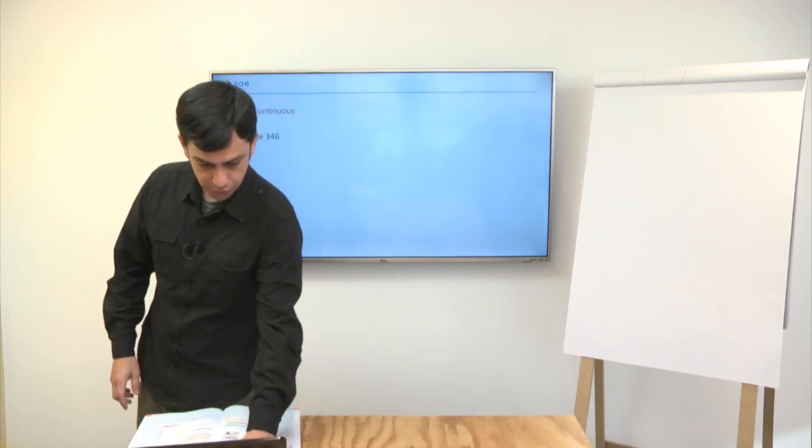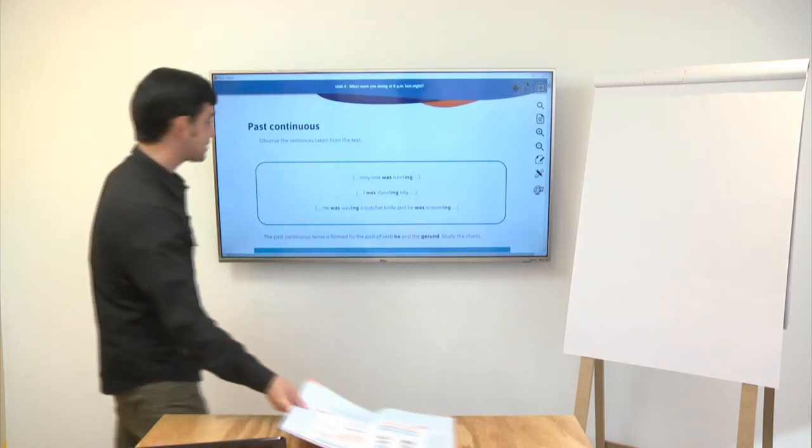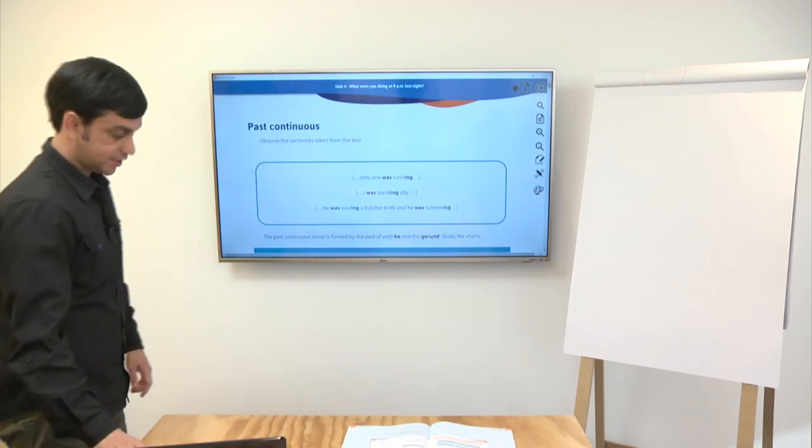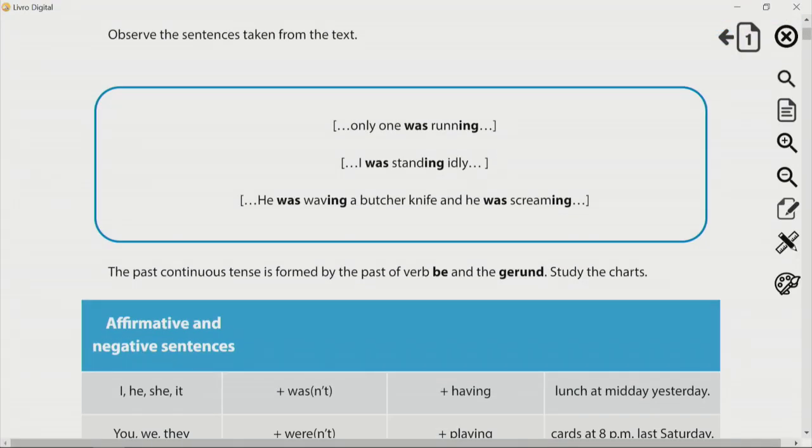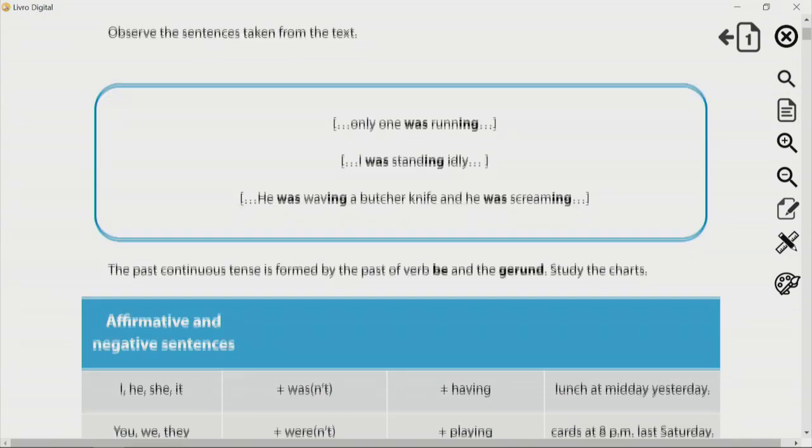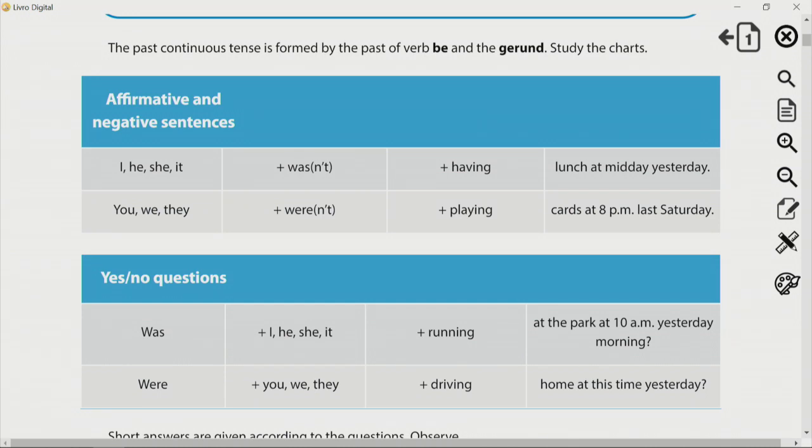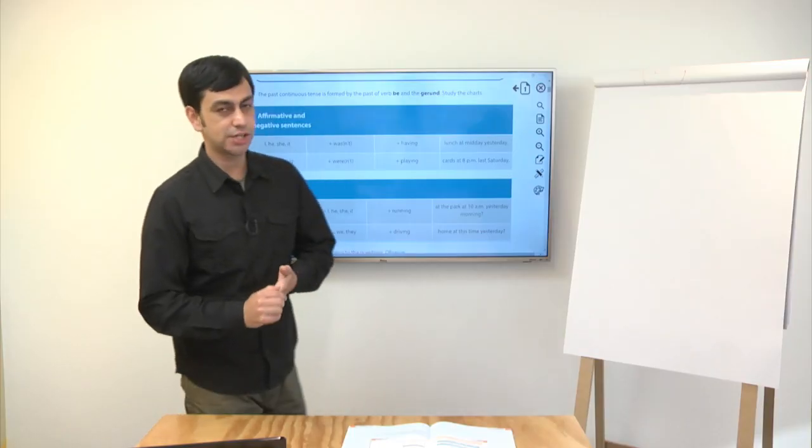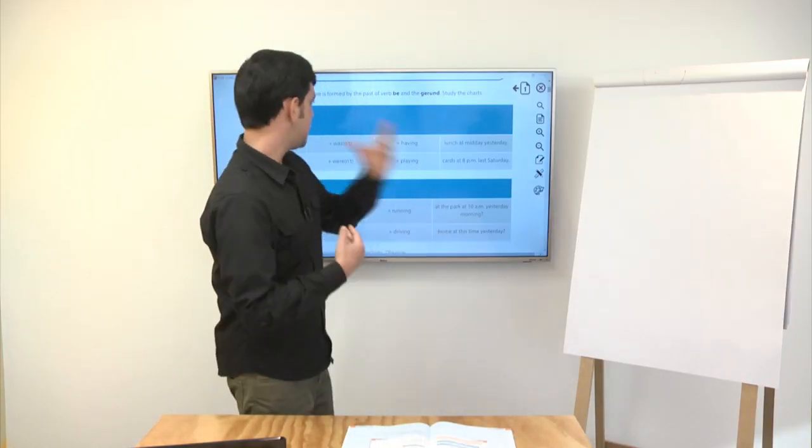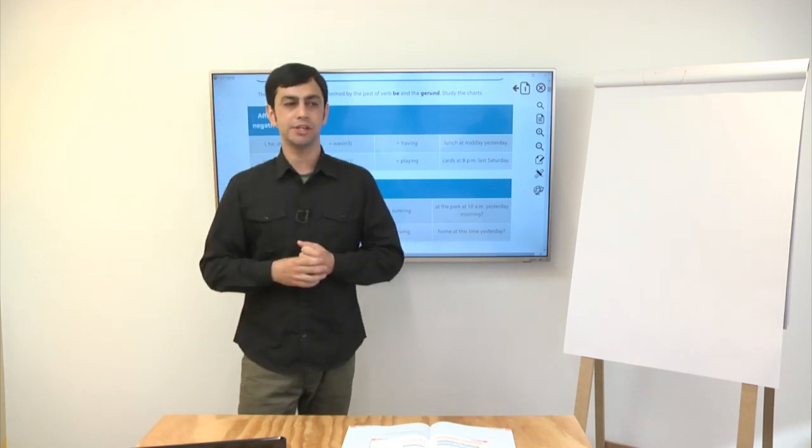So, if we move to page 346, you have the past continuous. Vocês têm aqui algumas frases que foram retiradas do texto. The past continuous is formed by the past of verb to be and the gerund. Study the charts. Vamos formar, então, o past continuous usando o verbo to be no passado e um verbo principal com ing no final.